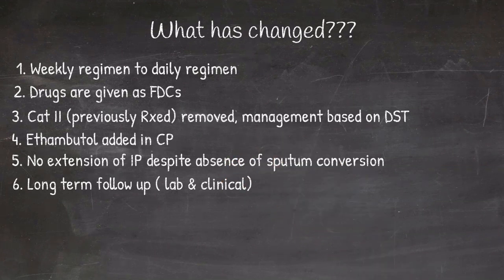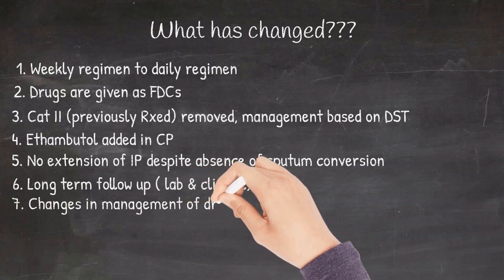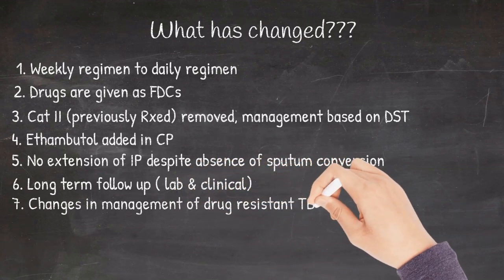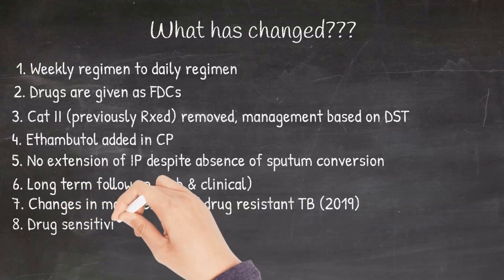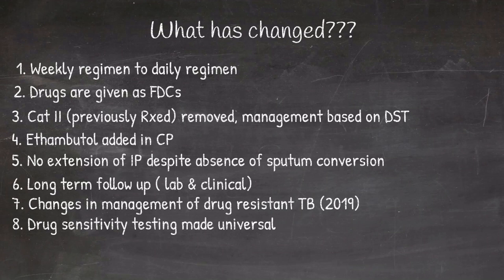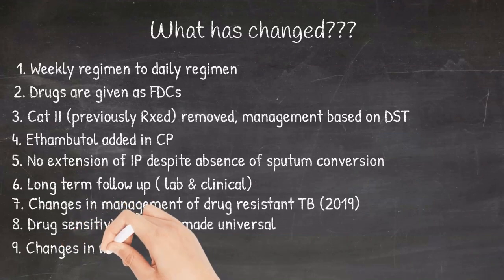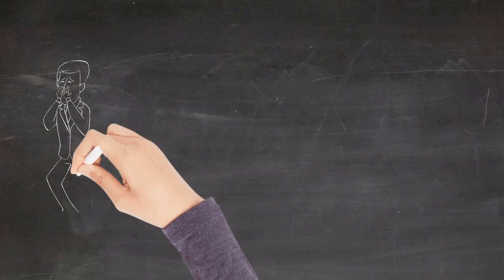There are some changes in the management of drug-resistant tuberculosis based on the guidelines released in 2019. The drug sensitivity testing has been made universal. That is, all TB patients are now subjected to drug sensitivity testing. There are now five weight bands instead of four that was mentioned in 2016 guidelines.